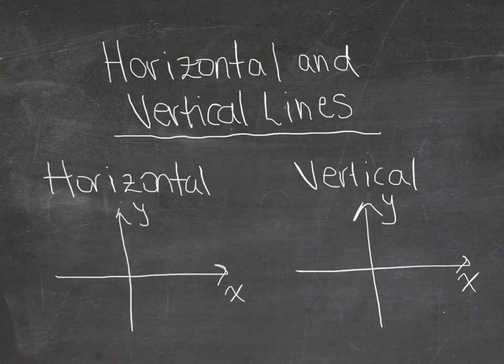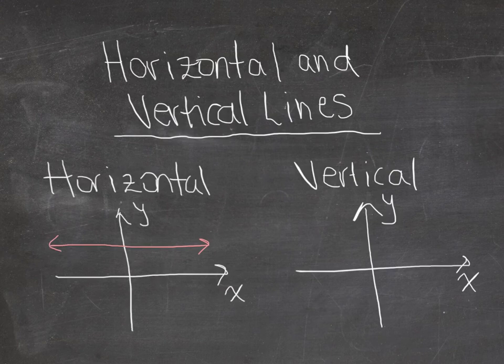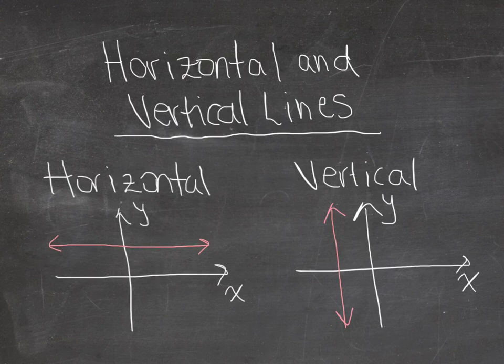This video is about horizontal and vertical lines. So what is a horizontal line? It's a line that goes through the y-axis, something like this. It would be a horizontal line. And a vertical line goes through a point on the x-axis, so that would be an example of a vertical line. So let's look at some properties of horizontal and vertical lines.